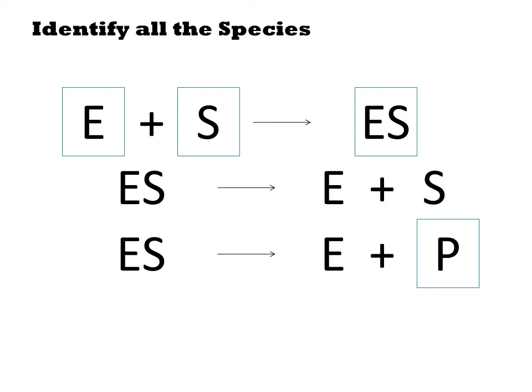The next step is to identify all your distinct species. Some of these, like E and P, are single molecules, while other species, like ES, will be complexes. So in this case, there are four distinct species whose concentrations we need to follow.